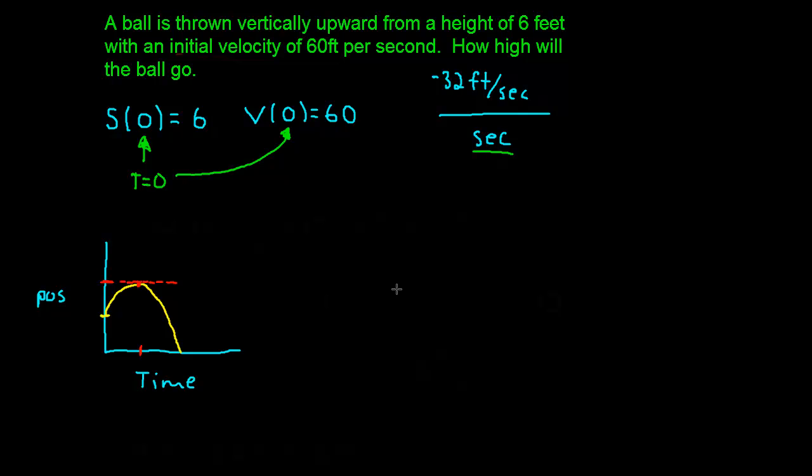Okay, so the only thing we have really is an acceleration function. And the acceleration at any time in this ball's journey is going to be negative 32 feet per second per second. Okay, so how do you get the velocity function? Well, if the acceleration function is simply the derivative of the velocity function, then it makes sense that the velocity function is the anti-derivative of the acceleration function.